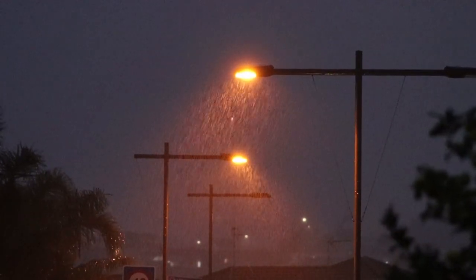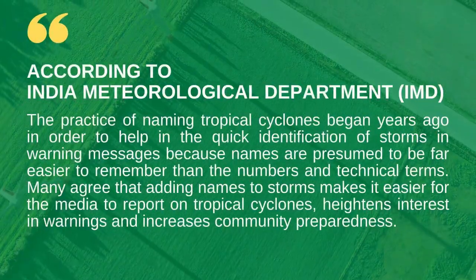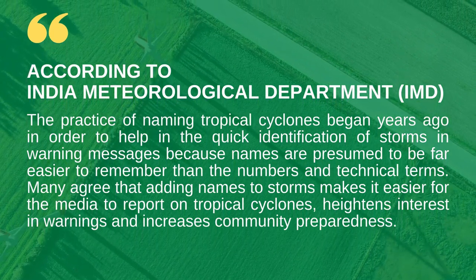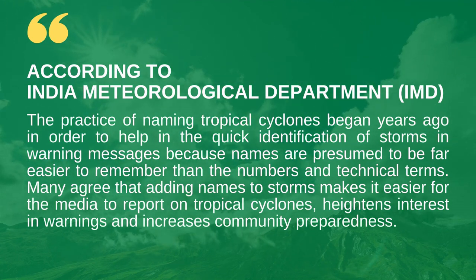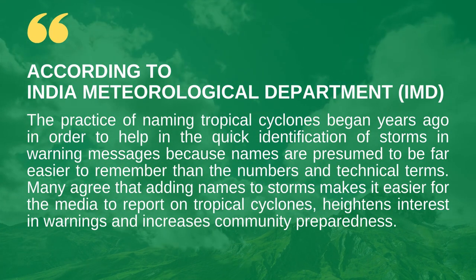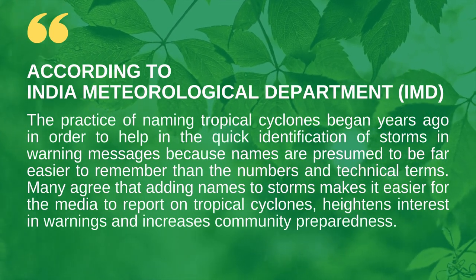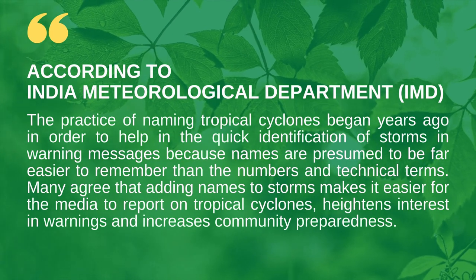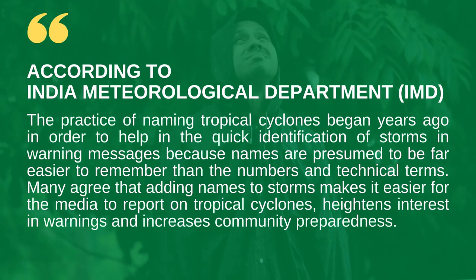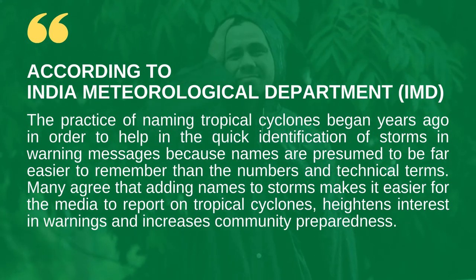First, let us try to understand why cyclones are named. According to the IMD, the India Meteorological Department situated in New Delhi, India, the practice of naming tropical cyclones began years ago in order to help in the quick identification of storms in warning messages, because names are presumed to be far easier to remember than numbers and technical terms. Many agree that adding names to storms makes it easier for the media to report on tropical cyclones, heightens interest in warnings and increases community preparedness.